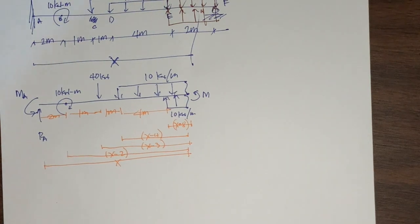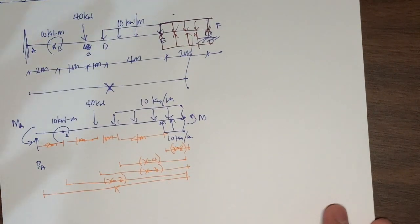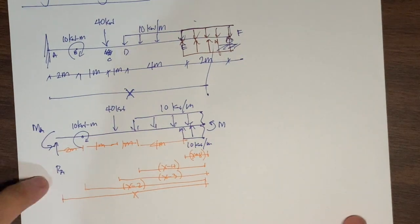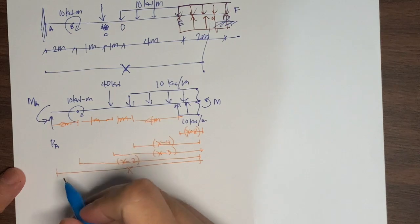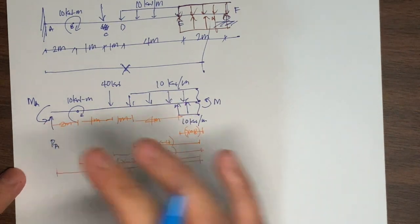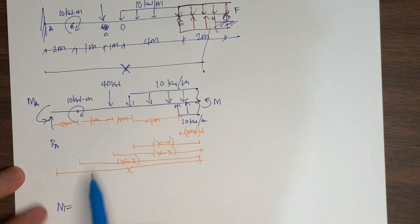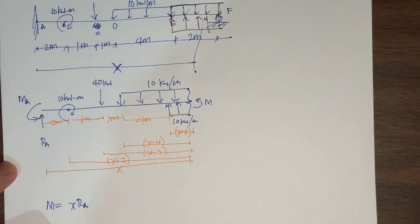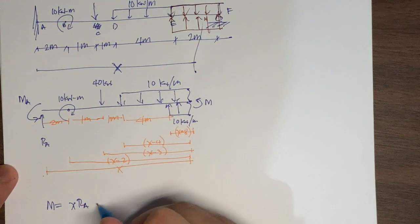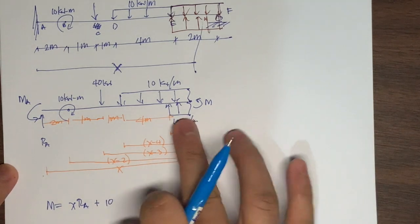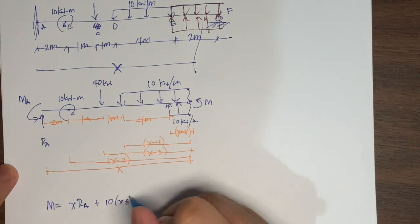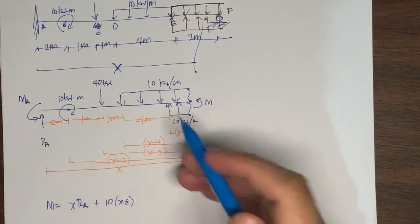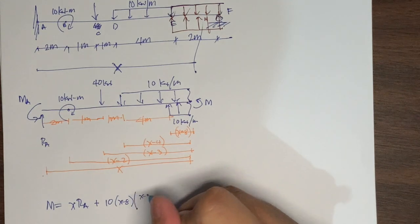Now let's create the moment equation. We have one redundant force but two unknown forces — Ra and Ma — based on our free body diagram. The moment equation is: M equals Ra times x, plus 5 times (x minus 8) squared — from the extended upward distributed load — plus 10 times (x minus 2) raised to zero for the concentrated moment, minus Ma.